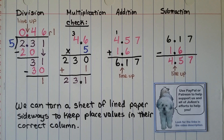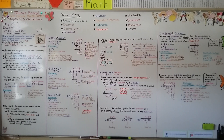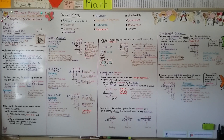You can turn a sheet of lined paper sideways to keep place values in their correct columns. You can also check the description to support the channel via PayPal or Patreon. In our next lesson, 5.5, we're going to model dividing decimals by decimals. Remember, the decimal point in the quotient goes directly above the decimal point in the dividend. Stay safe, stay well, and I'll see you next time!